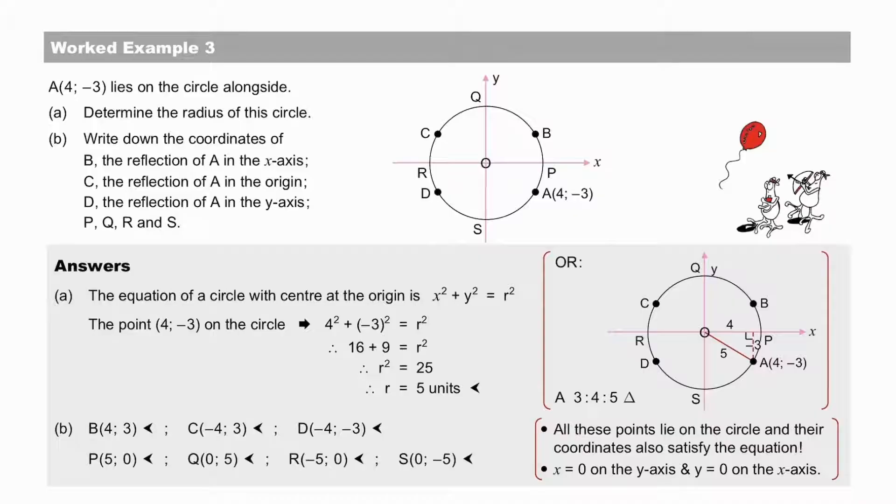Pause to check your answers to worked example 3, where we have the point A, (4, -3) on the edge of the circle. To determine the radius of the circle, we do so either by substitution, or by recognising the 3, 4, 5 triangle.